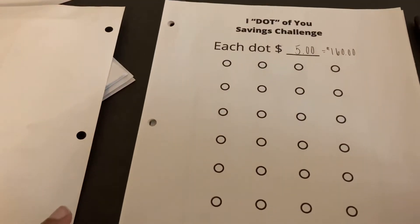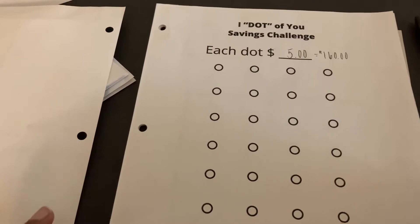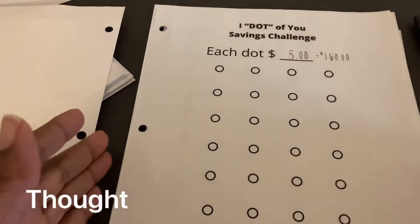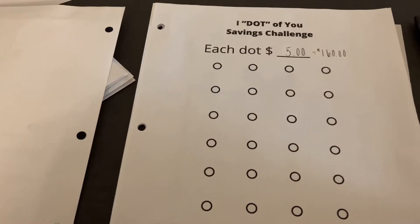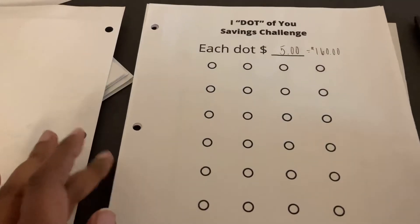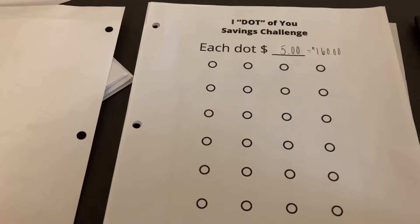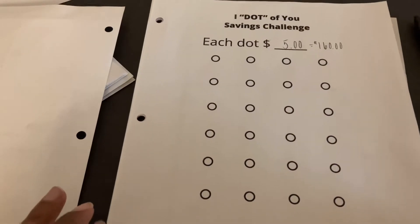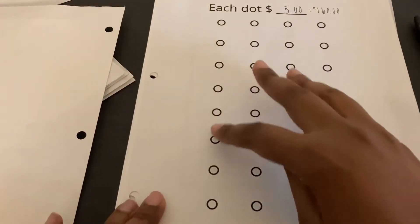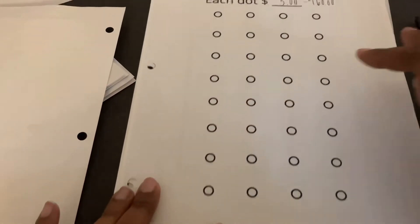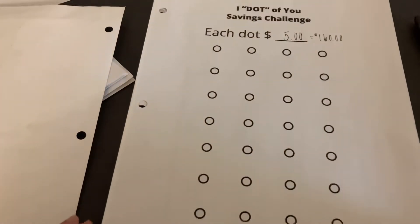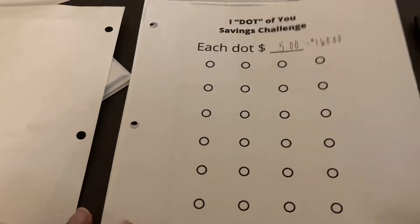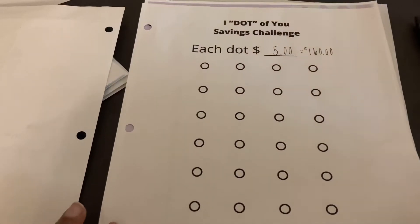It's called I Dot of You, so it's a play on the word thought. This could be, you know, you haven't thought of yourself. I know a lot of people say they put others first before they put themselves first, so this is one that could be creative for you, or maybe you dot about someone else. I do have 32 dots, and each dot will represent $5, bringing me to a total of $160.